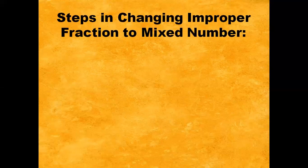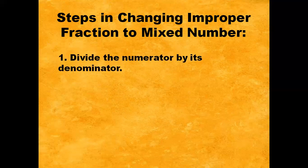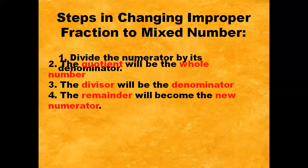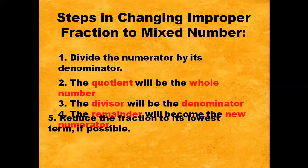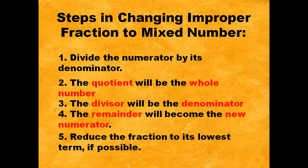Now, what are the steps in changing improper fraction to mixed number? Step 1: Divide the numerator by its denominator. Step 2: The quotient will be the whole number. The divisor will be the denominator. And the remainder will become the new numerator. And last, reduce the fraction to its lowest term if possible.